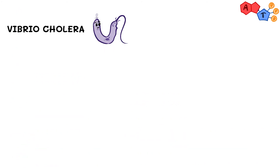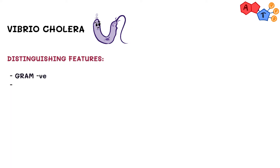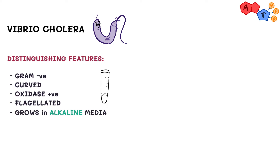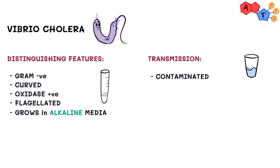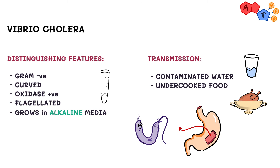The second organism is Vibrio cholerae. For its characteristics, like the other organisms, it is a gram-negative curved rod, oxidase positive with a flagella. In addition, it grows in alkaline media. For clinical significance, it is mainly transmitted by ingestion of contaminated water or uncooked food. It is sensitive to the high acidity in the stomach and thus requires a high dose to infect humans.